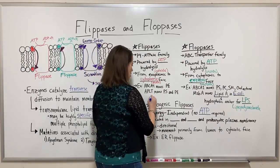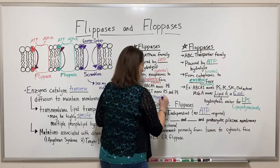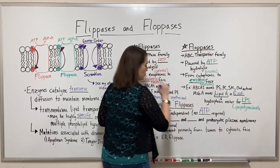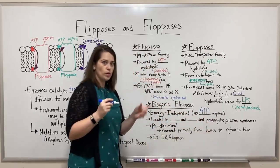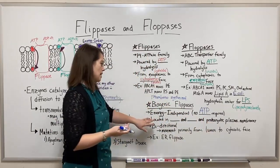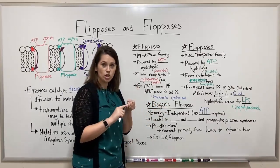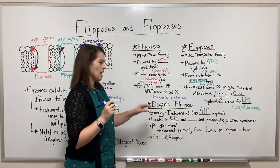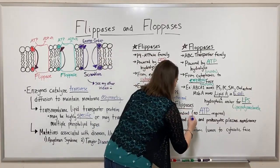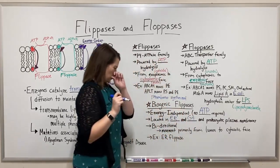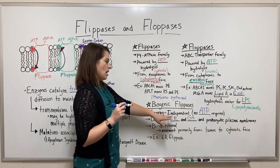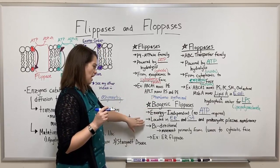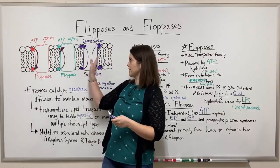Biogenic flipases are located in biogenic membranes — where membranes are primarily synthesized. In prokaryotes, this is the plasma membrane. In eukaryotes like humans, biogenic flipases are located in the endoplasmic reticulum (ER) membrane and in the Golgi apparatus (GA) membrane. These are bi-directional, just like scramblases — they can go in either direction.